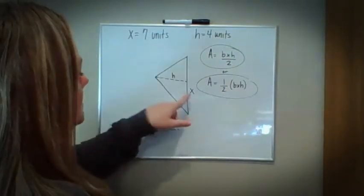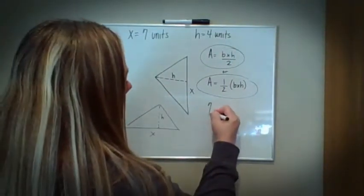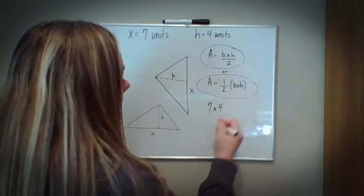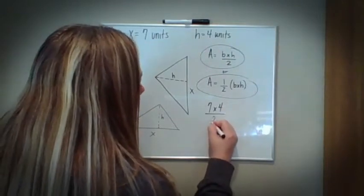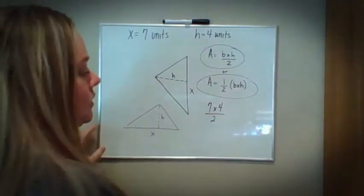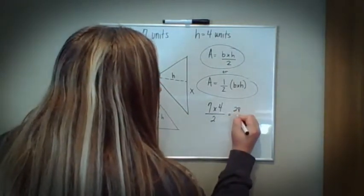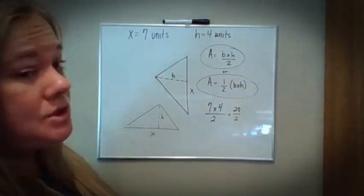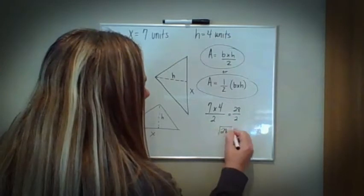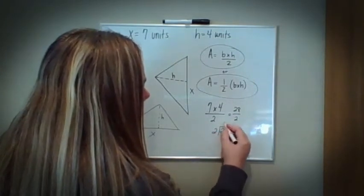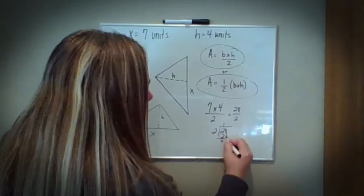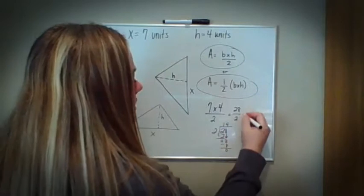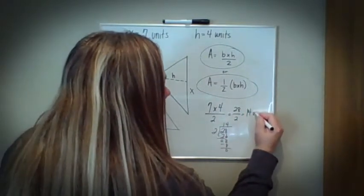I'm going to take 7 units, which is my base, multiply that times h, which is 4 units, and then divide that by two. Seven times four is 28, and 28 divided by two — two goes into 2 one time, two goes into 8 four times with nothing left over — gives 14 units.